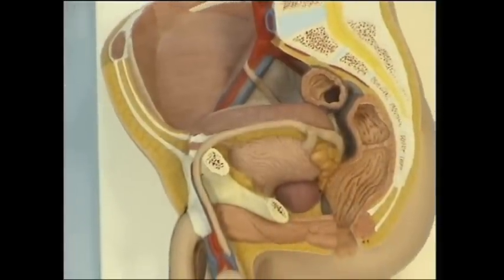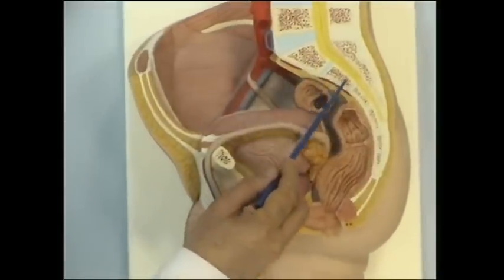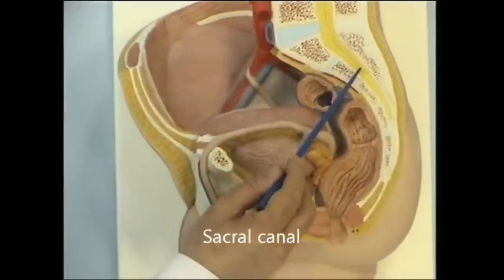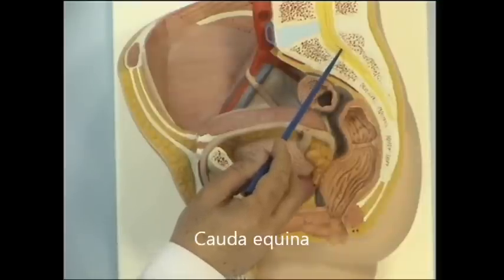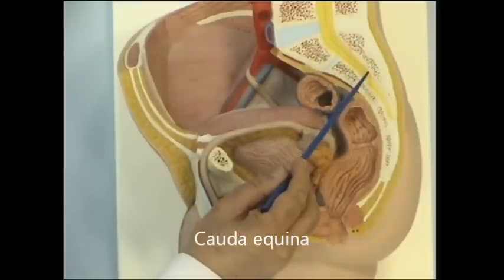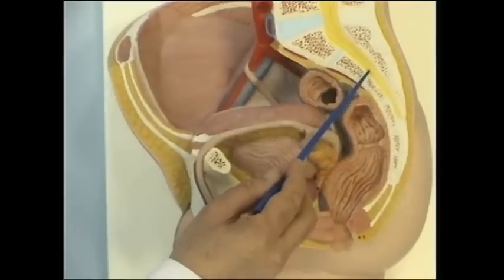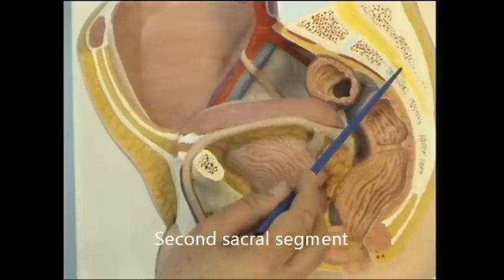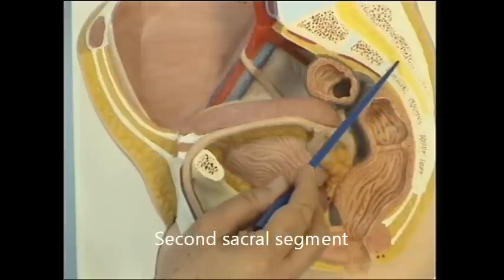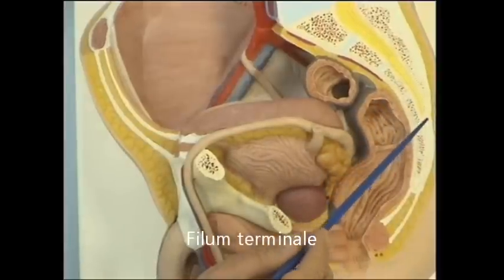Now let's go into more details. Look at the sacrum and notice the sacral canal here. The sacral canal contains the cauda equina, and you can see that the subarachnoid space ends at the level of the S2 segment. Below that, there is no subarachnoid space, and the sacral canal is occupied by the filum terminale.